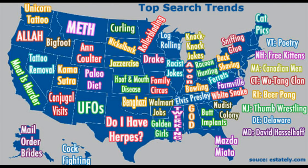Top search trends — so as Google records everything that everybody does, you can break it down by state when you search their database. In California, the number one search term is 'meat is murder.' Somehow Oregon is 'Allah.' Unicorn tattoo for Washington — really, nothing can beat unicorn tattoo in searches for Washington State. It's ridiculous.